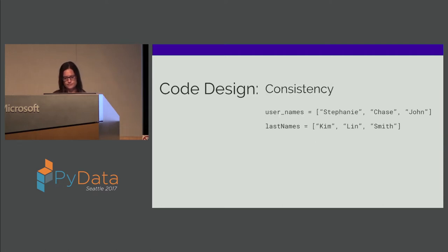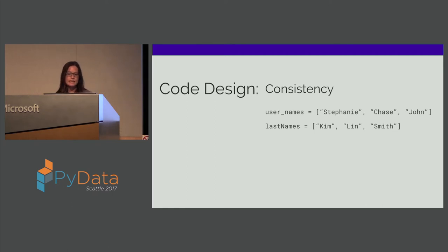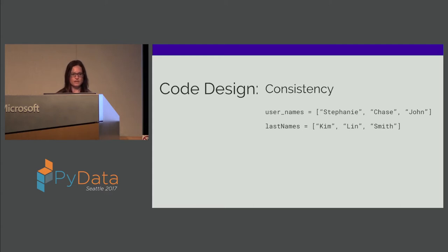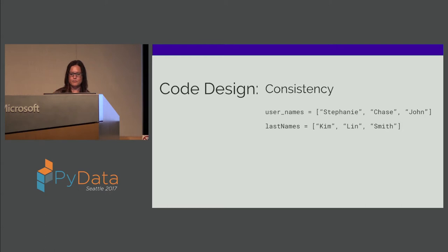Be consistent in your code — don't use both camel case and snake case in the same script. But this goes beyond a single script: think of each piece of code as having your name stamped on it. You want consistent naming conventions from one project to the next, and similar documentation from project to project, because it just speeds up thinking through what is happening in your code.